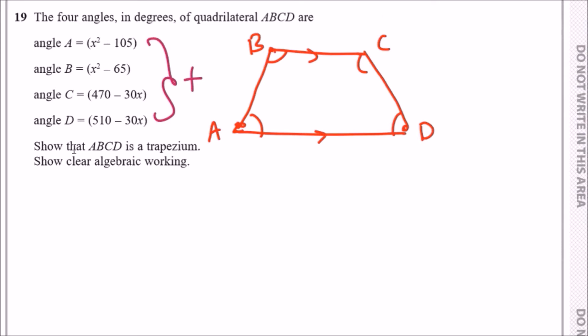x squared plus x squared gives us 2x squared. Adding up the x terms: minus 30x minus 30x minus 60x. Adding up all the constant terms: 470 plus 510 minus 65 minus 105. Quickly doing the calculator, you should get 810.